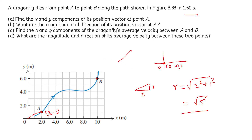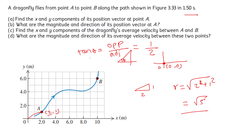Let's draw a right angle triangle and understand what the value of tan theta is. We can write the value of tan theta as the opposite side divided by the adjacent side. As we substitute, the length of the opposite side is equal to 1 and the length of the adjacent side is equal to 2. From here, we can take the tan inverse and find the value of angle theta.